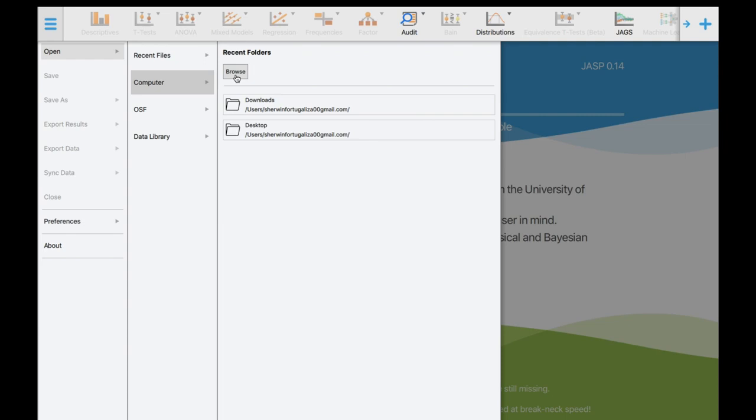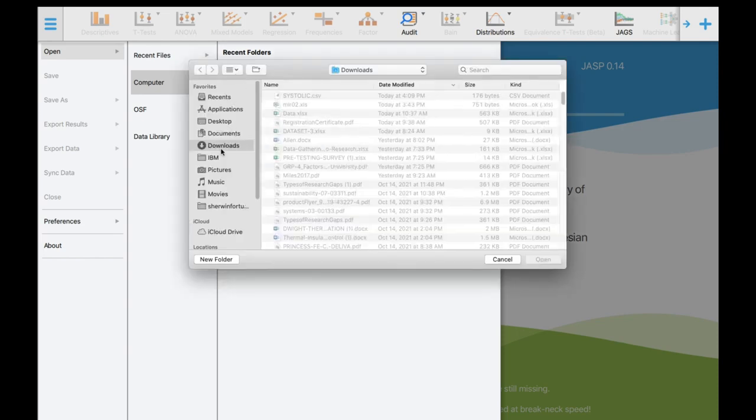Remember, where did you save your file? So in my case, I saved the file in the downloads. And the file name is systolic.csv, and click open.